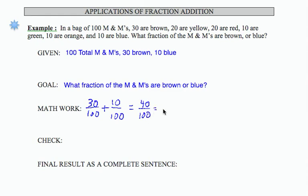I can reduce this fraction using common factors. 40 is 2 times 20. 100 is 5 times 20. So I can remove the common factor of 20, which gives me two-fifths.